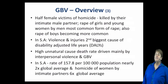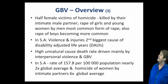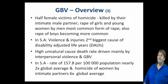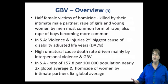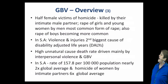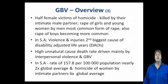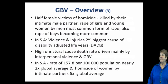Half the female victims of homicide are killed by an intimate partner. So of all women who are murdered, half would have been killed by someone intimate to them. Also, rape of girls and young women by men is the most common form of rape, and the rape of boys is becoming more common — so rape of children is a major problem.